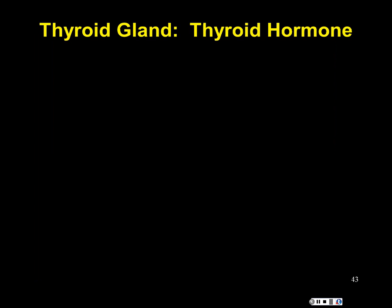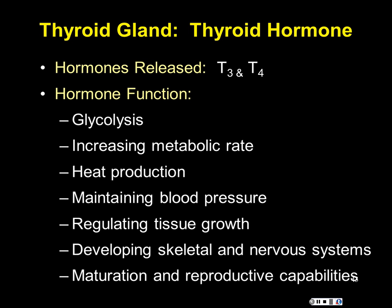The thyroid gland, which we saw in lab Monday and Tuesday, releases thyroxine — also called T3 and T4, where the subscript numbers indicate the number of iodine atoms in the molecule. Thyroxine has a lot to do with metabolism, promoting processes like glycolysis and overall metabolic rate. More metabolically active tissues produce more heat as a byproduct with each chemical transformation.